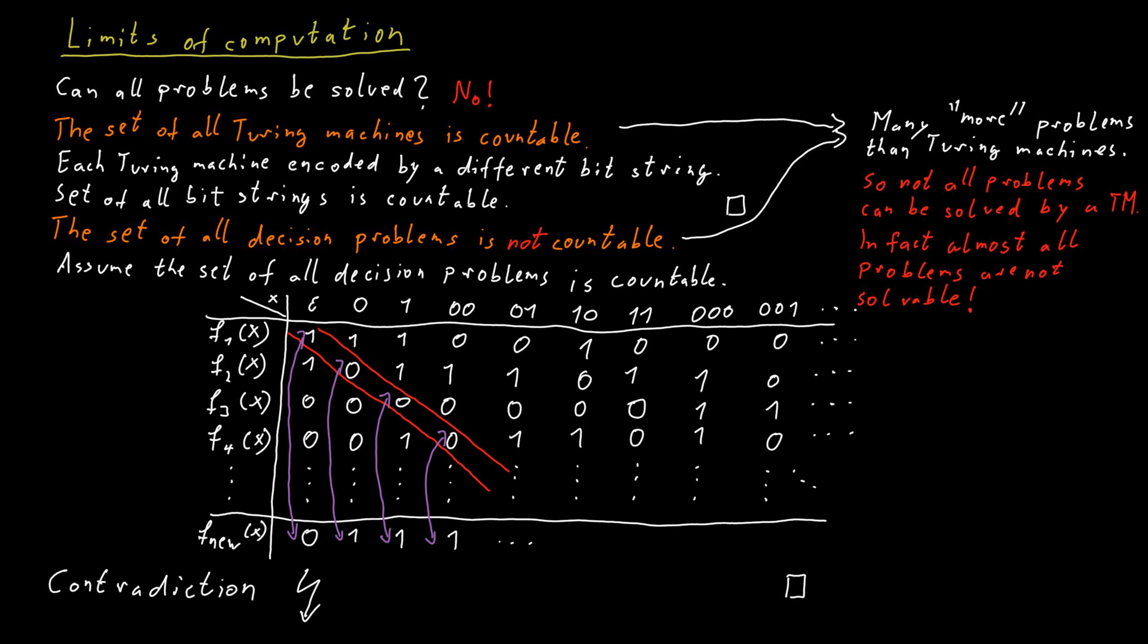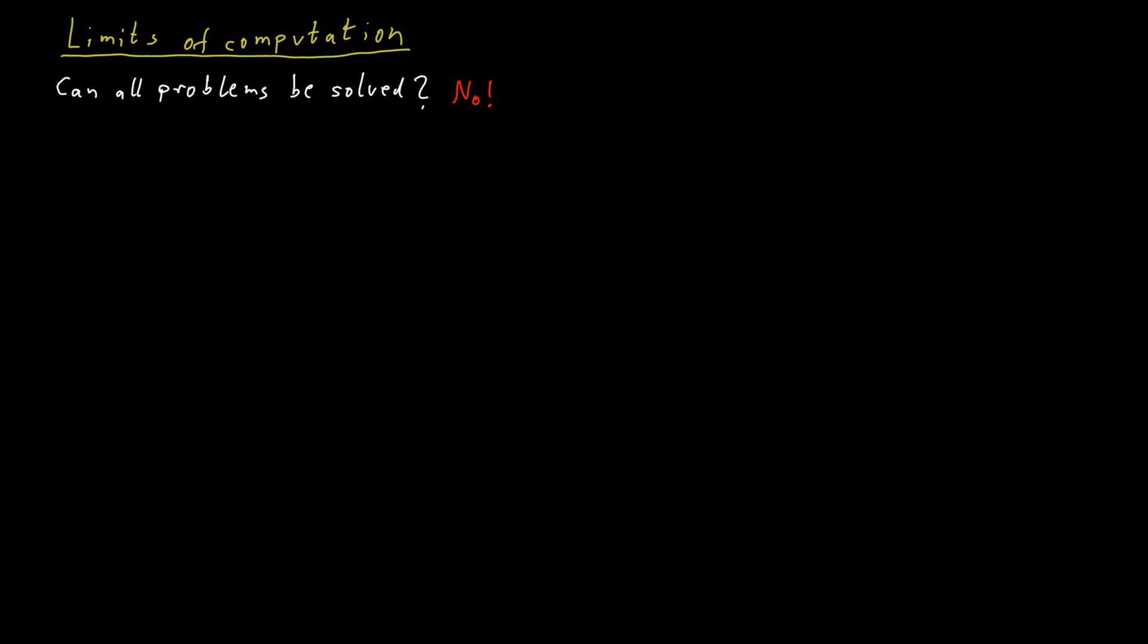Now, I admit that this argument is a bit abstract, but we can, in fact, write down a specific decision problem that is not decidable as well. We just use the idea from this diagonalization construction. So, here's a decision problem that is not decidable.